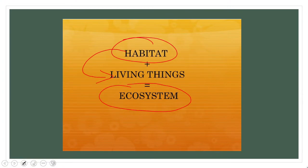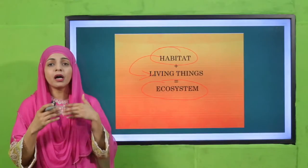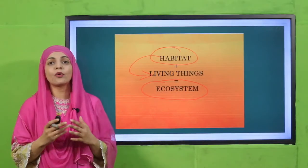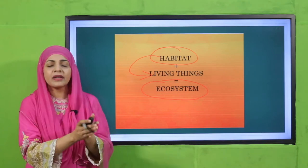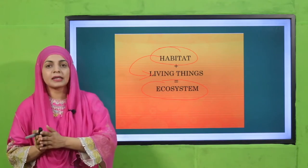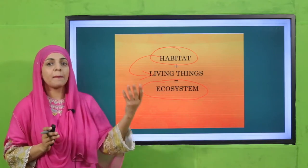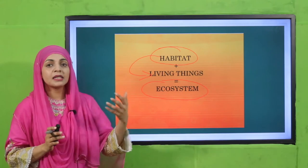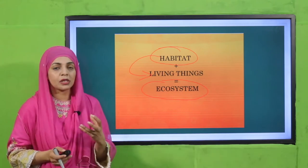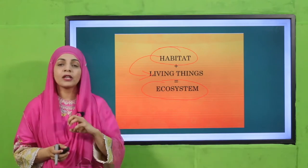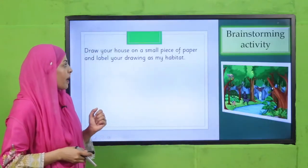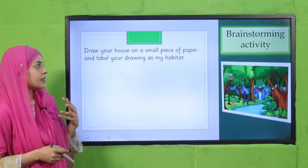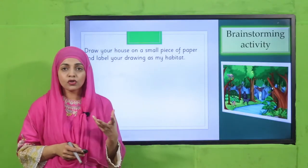Living things reside in their habitat, and they interact with the non-living things present there as well as with other living things. This interaction between living and non-living things makes up an ecosystem, and that is what this chapter is about.